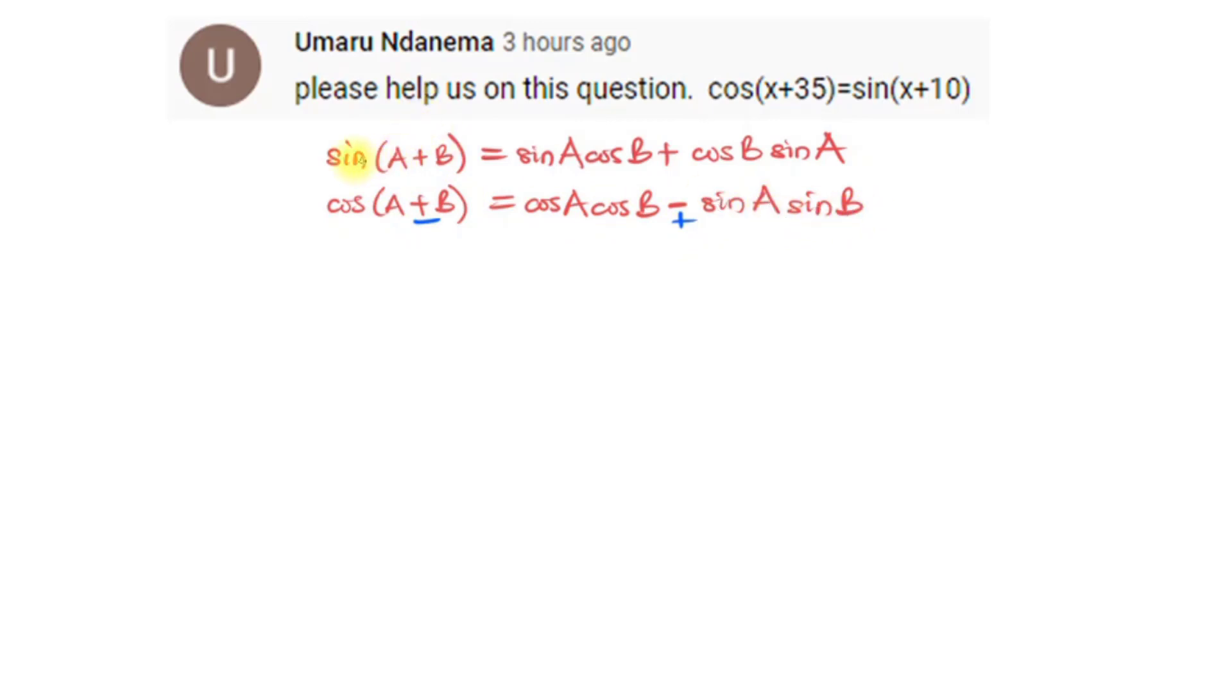And the same thing also goes for the sine: sin(A±B) is sin(A)cos(B) ± cos(A)sin(B). So you just know that so that if the question is changed then you'll be able to change appropriately and solve your question.